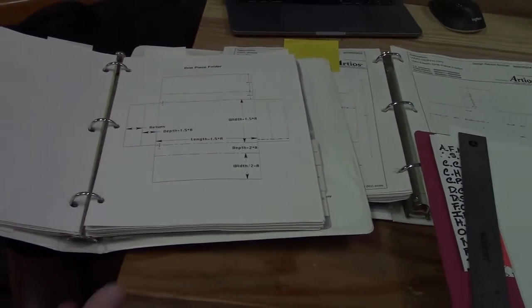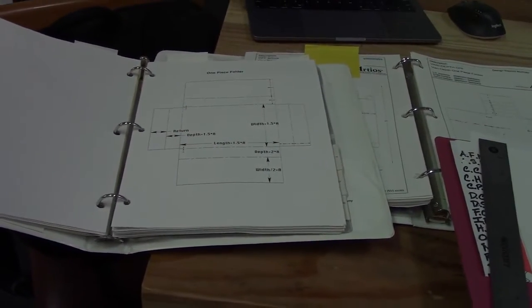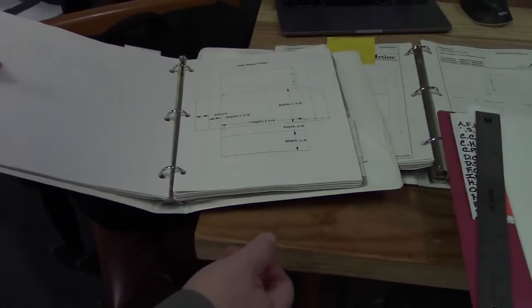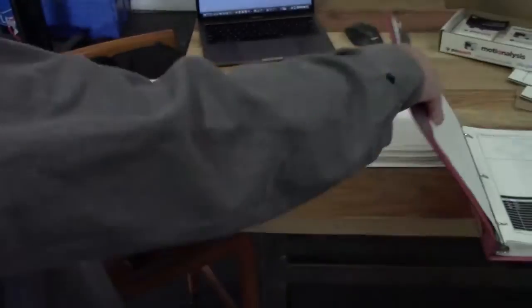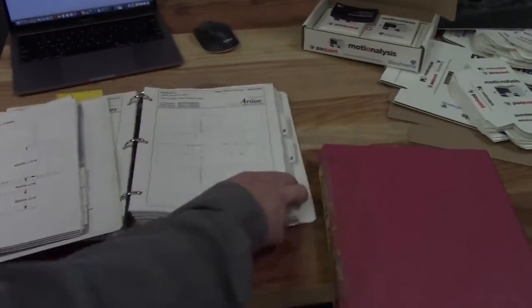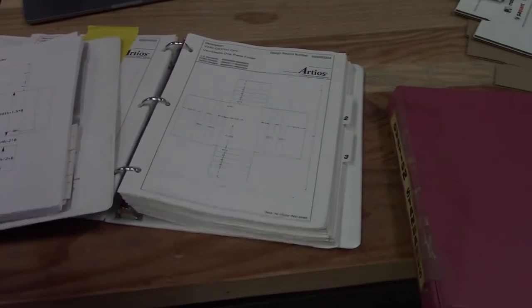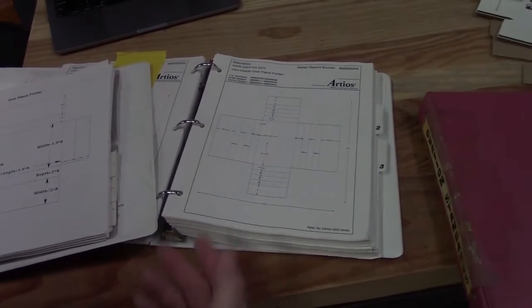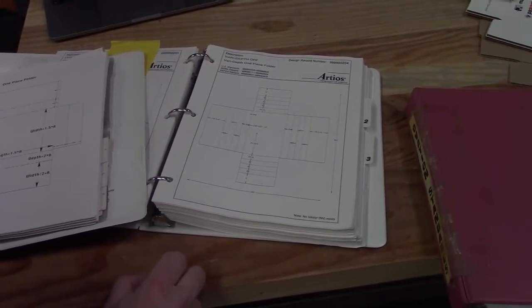This idea of parametrics has been around more than 30 years, much longer than that. And here's just another example of the same box from a software called Ardios that most people are familiar with. And this was copyrighted in 1996.